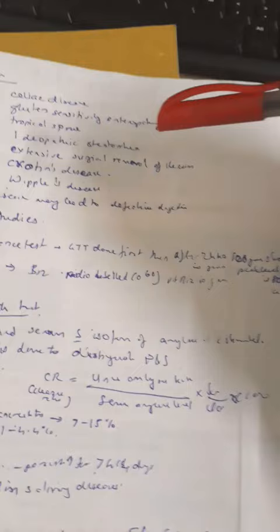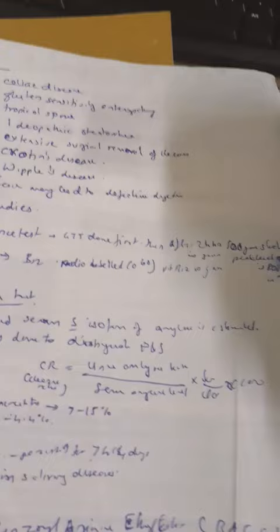These include fecal fat studies and starch tolerance test. GTT is actually done first - the glucose tolerance test is done first, and after 24 hours we will give the patient 100 grams and then estimate the glucose.